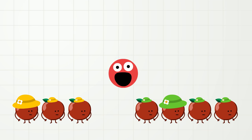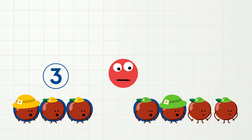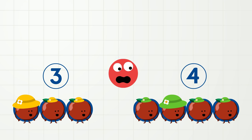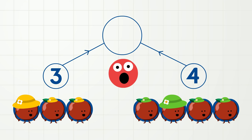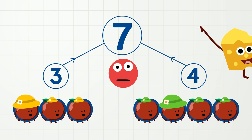So now we have one, two, three apples with yellow hats, and one, two, three, four apples with green hats. Add them together, and we have seven apples. So the numbers three and four make the number seven. Seven!